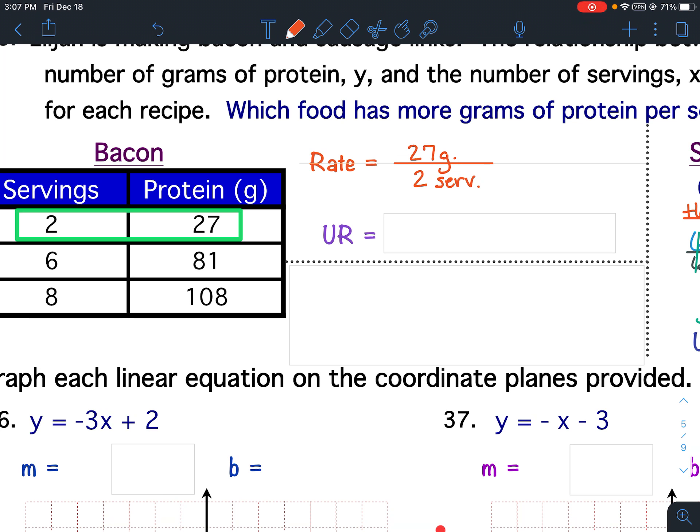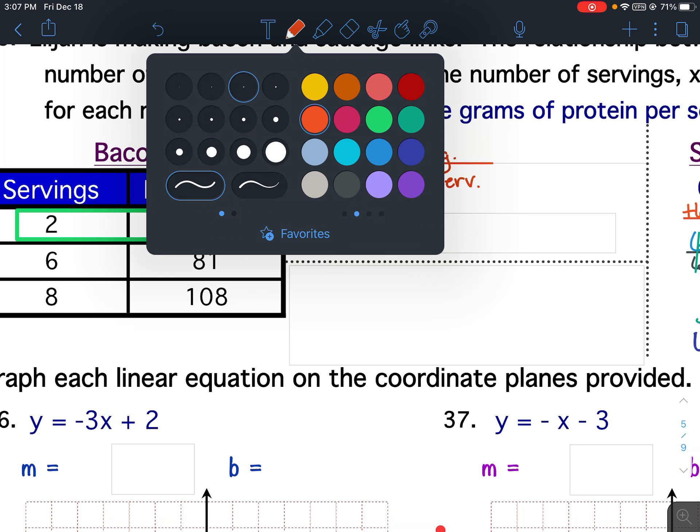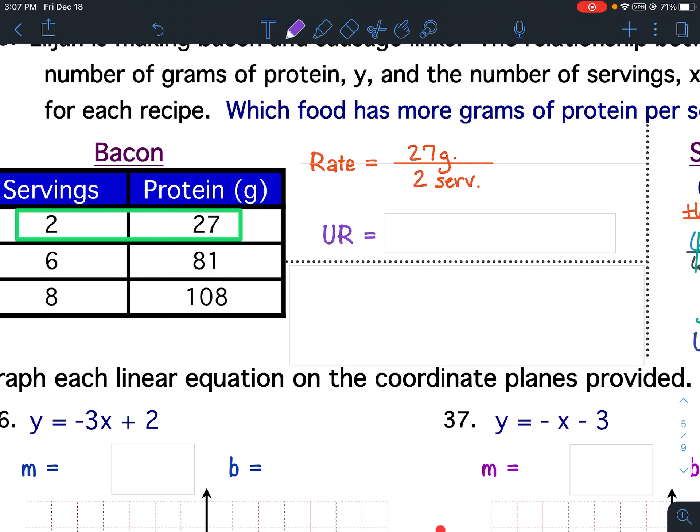So there are 27 grams of protein in two servings. Divide that out to find your unit rate. 27 divided by 2 is 13.5. So for bacon, there's 13.5 grams of protein per serving.